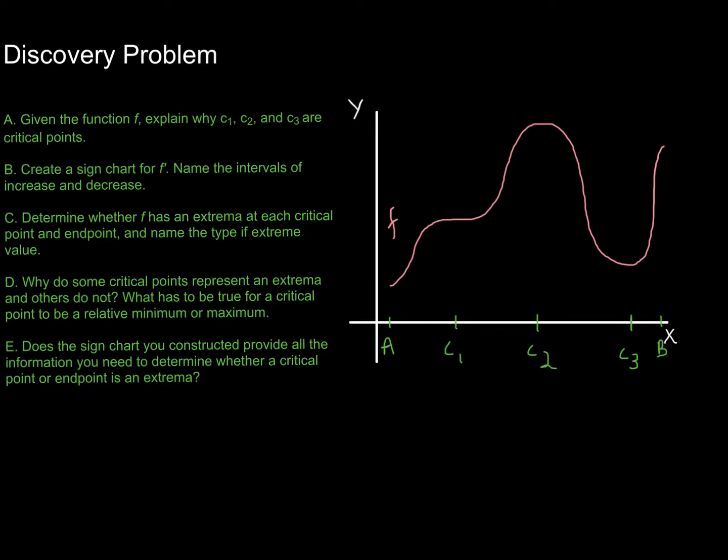To get started, let's consider this function f here. It's defined on the interval from a to b. Given the function f, explain why c₁, c₂, and c₃ are critical points, and go through b, c, d, and e. You don't need to copy down these questions — just answer them on your own so you can be as efficient as possible.